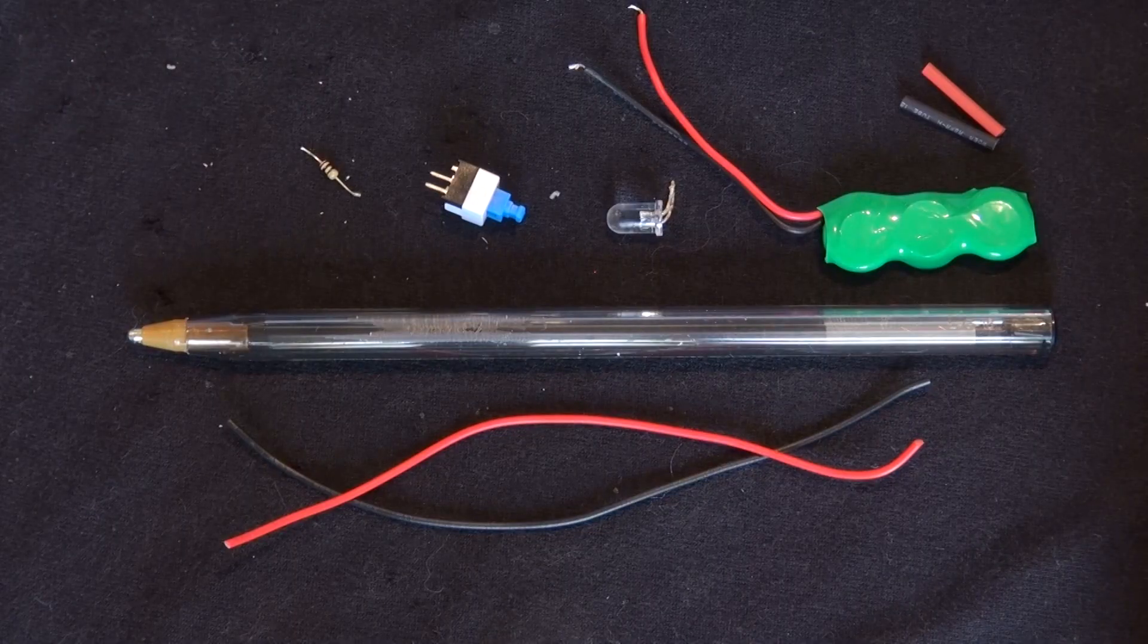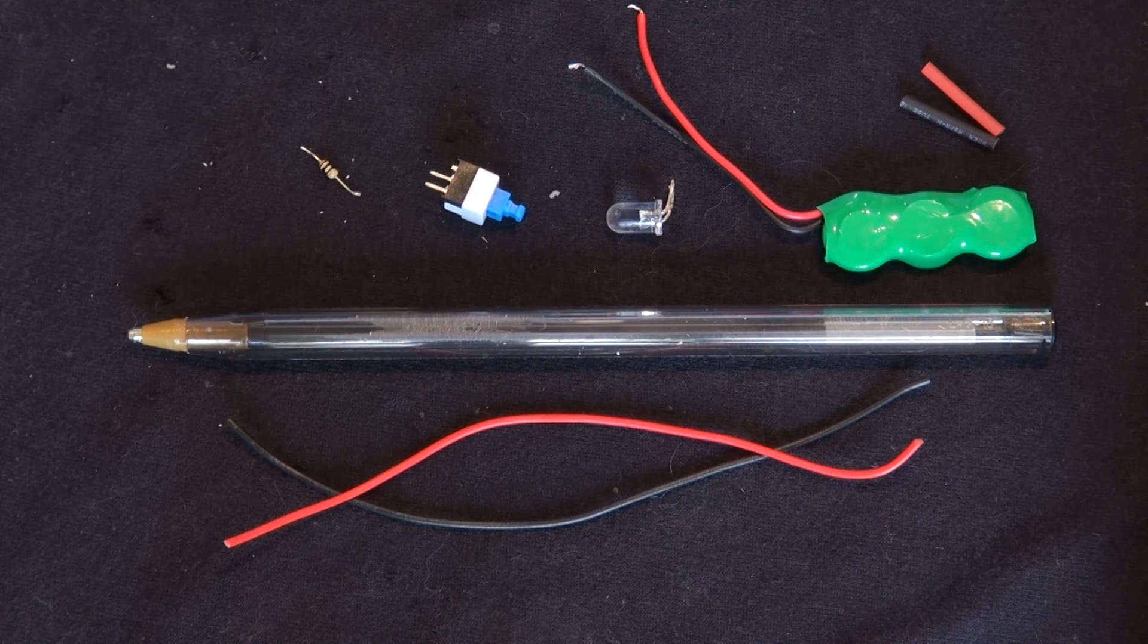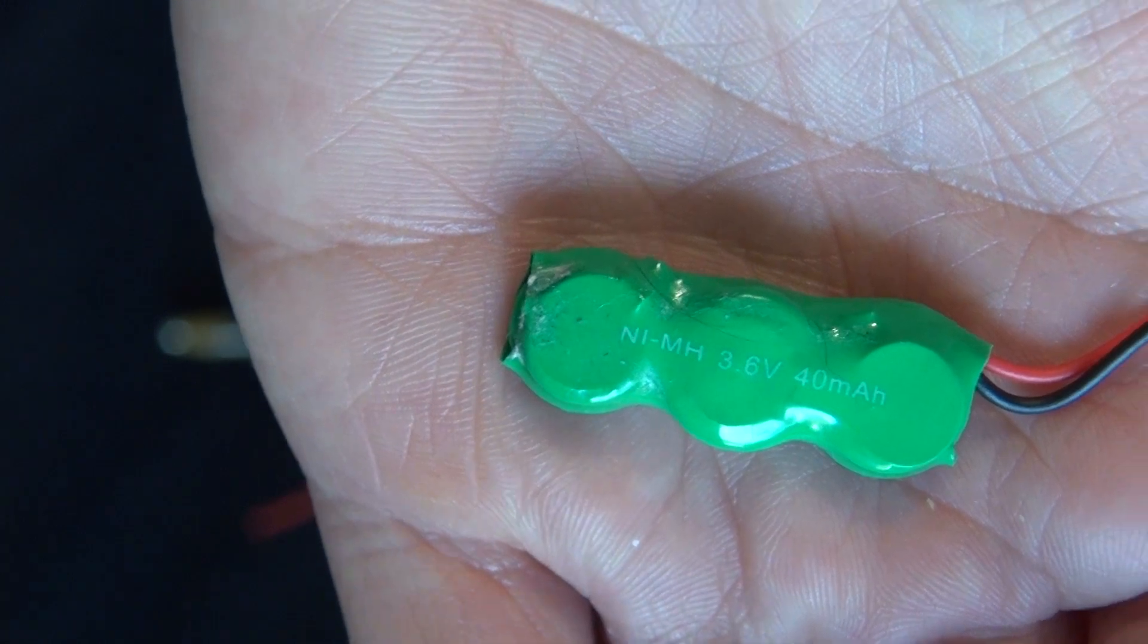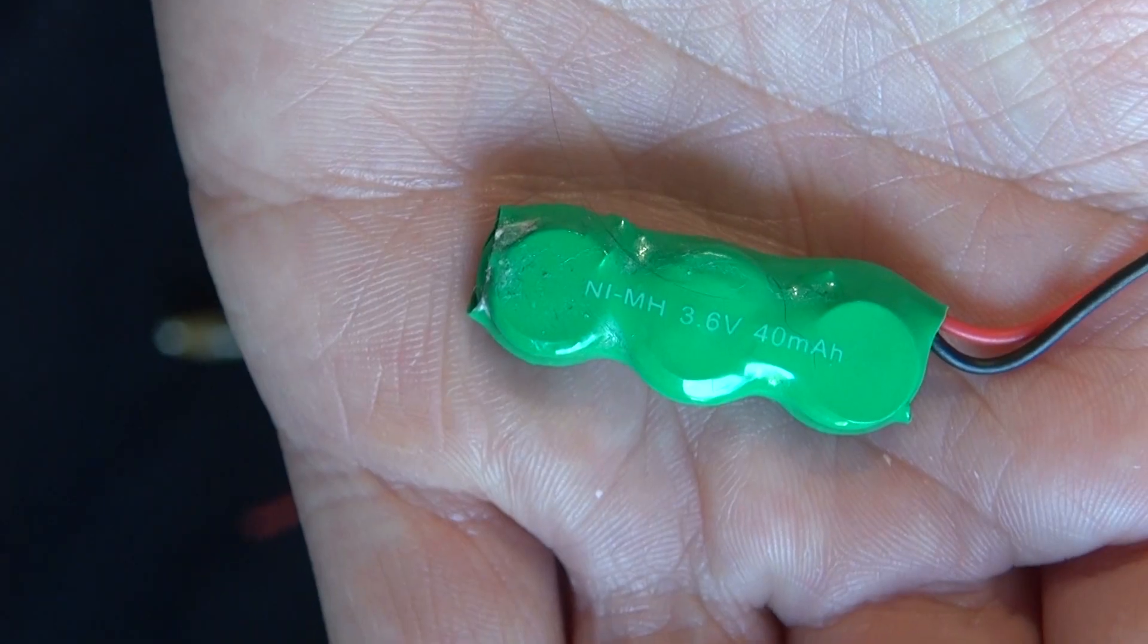Here are the parts that you're going to need to build this useful pen light. You'll need a simple ballpoint pen, a couple of wires, and a nickel metal hydride 3.6 volt 40 milliampere battery.